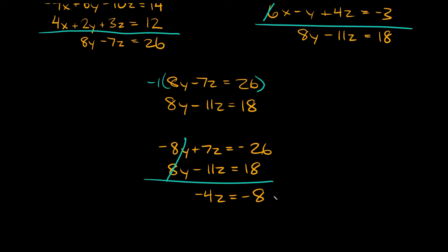Now we're left with one equation and one unknown. To solve for z, we just divide both sides by negative 4. Those cancel out and we get z equals positive 2. We just solved for one of the variables — I call that progress!